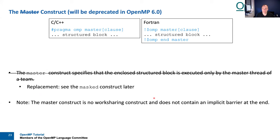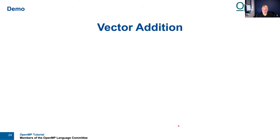The 'master' construct selects the initial thread to execute the structured block and is not a work-sharing construct, meaning there is no implicit barrier at the end — differing from 'single.' It's used in many existing programs but is confusing and politically no longer correct. Its replacement is the 'masked' construct. Since 'master' will be deprecated in OpenMP 6 and removed in future versions, write new code using 'masked' instead.